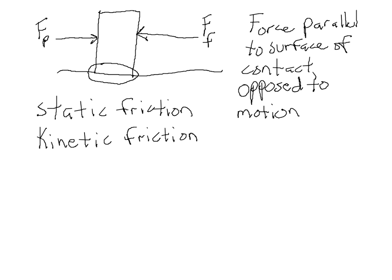Qualitatively, we've described friction. There are two different kinds: static and kinetic. Both kinds are always going to oppose motion, and both kinds are always parallel to the surface of contact. How about quantitatively? Both static and kinetic friction are proportional to the normal force on an object due to the surface of contact. To change that proportional to equal to, we need a constant of proportionality, which we call mu — a lowercase Greek letter mu. For static friction we use mu sub s, and for kinetic friction we use mu sub k.